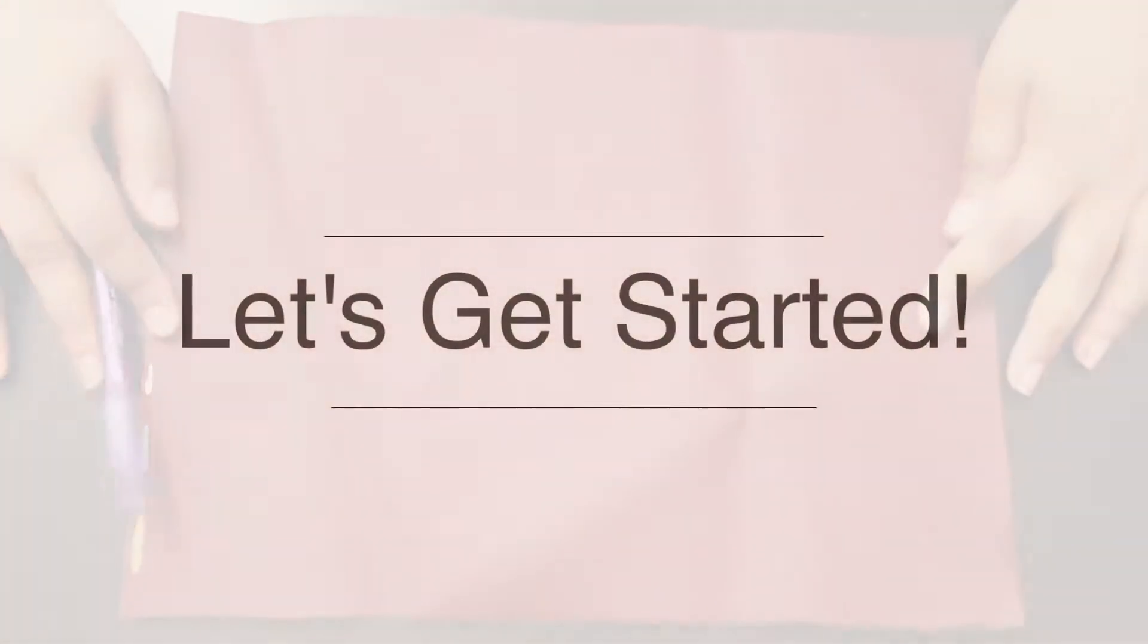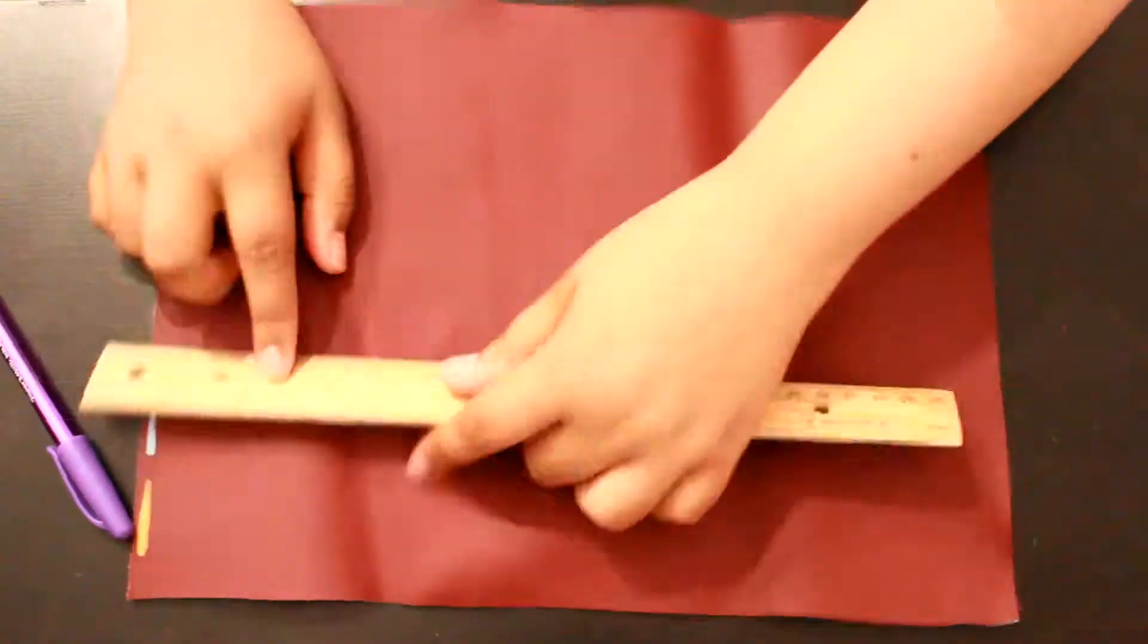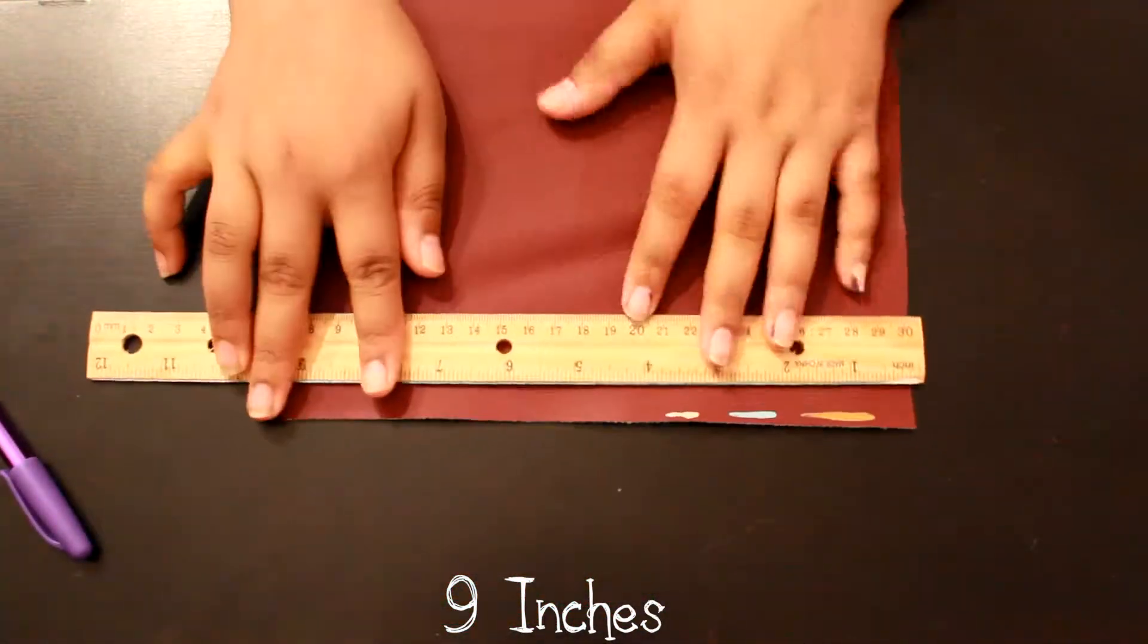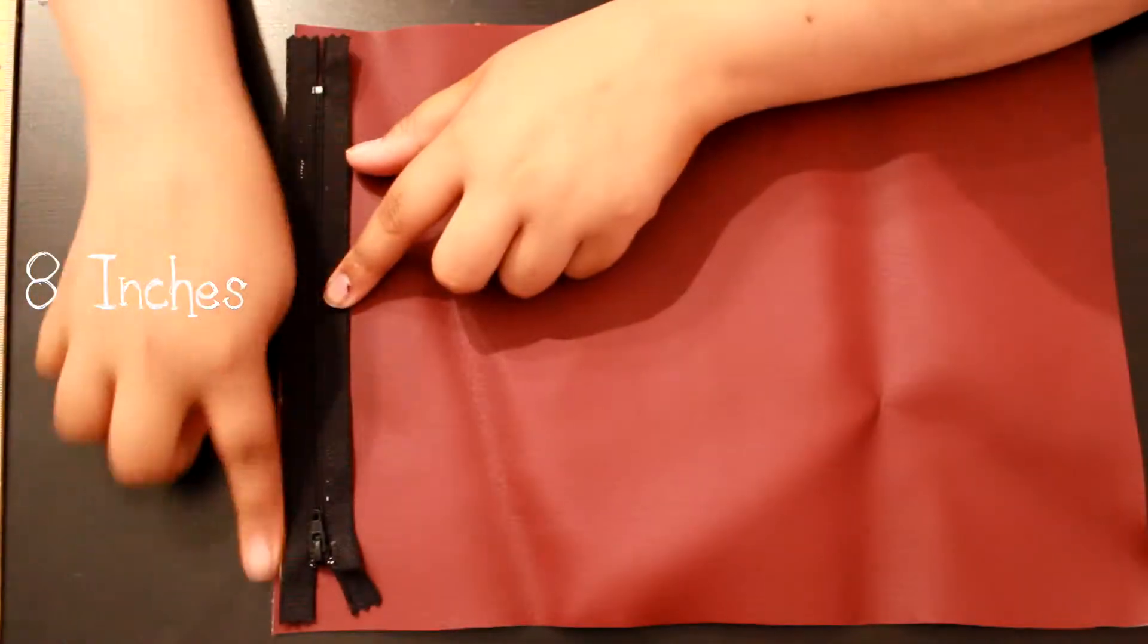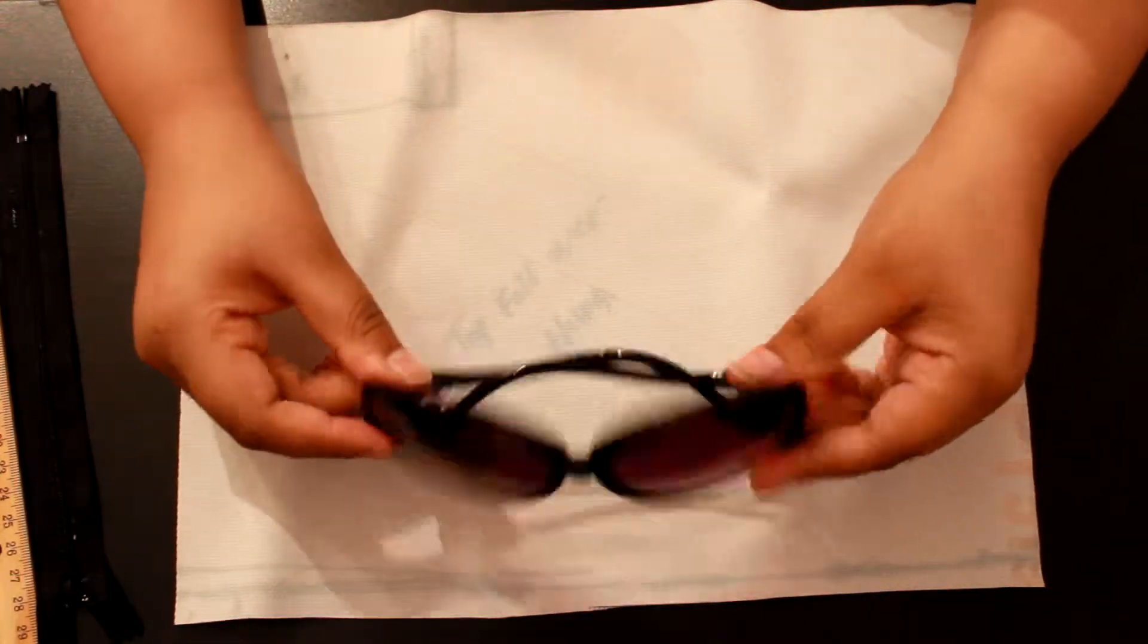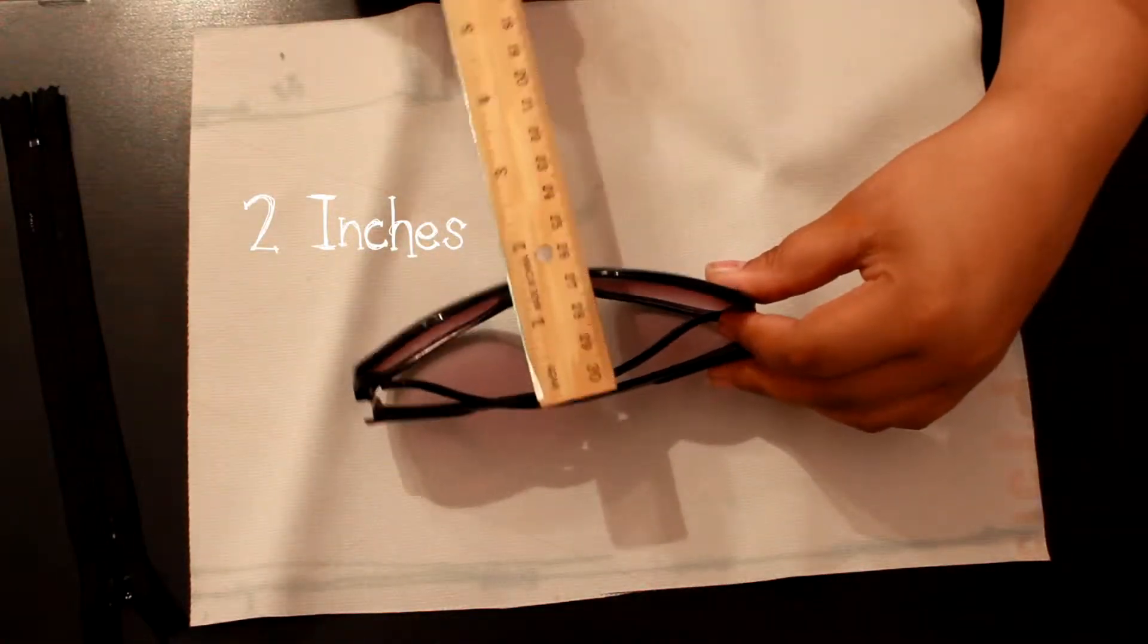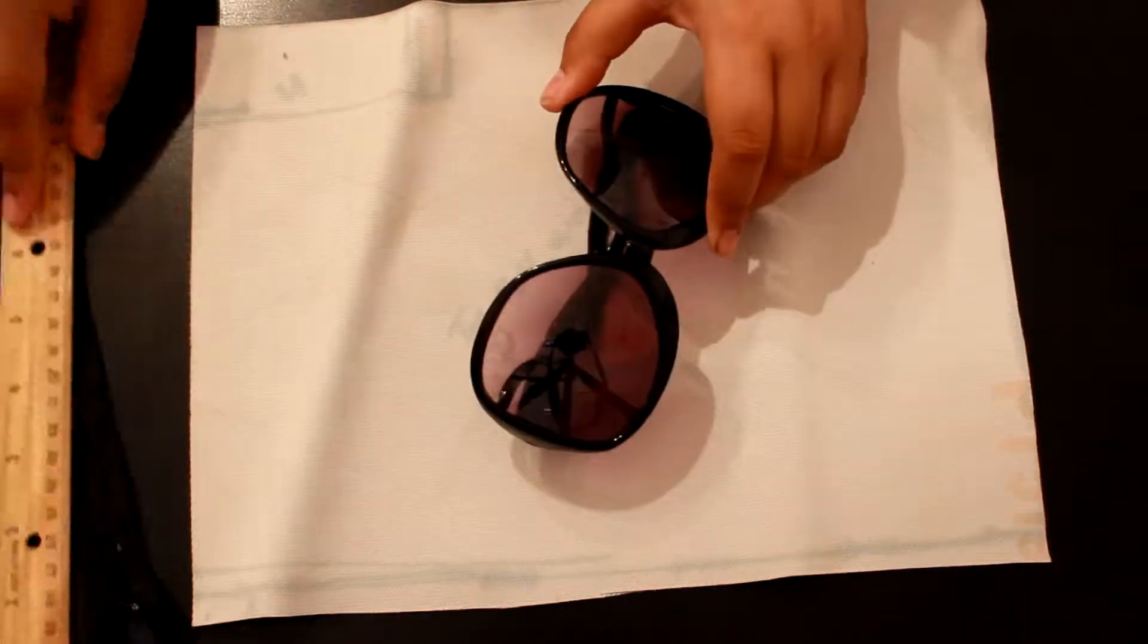So to start off, my leather fabric was 9 inches by 8 inches long. And my zipper was also 8 inches, so it worked out. And now I'm just going to see how big my sunglasses are. They were 2 inches wide and 7 inches long.